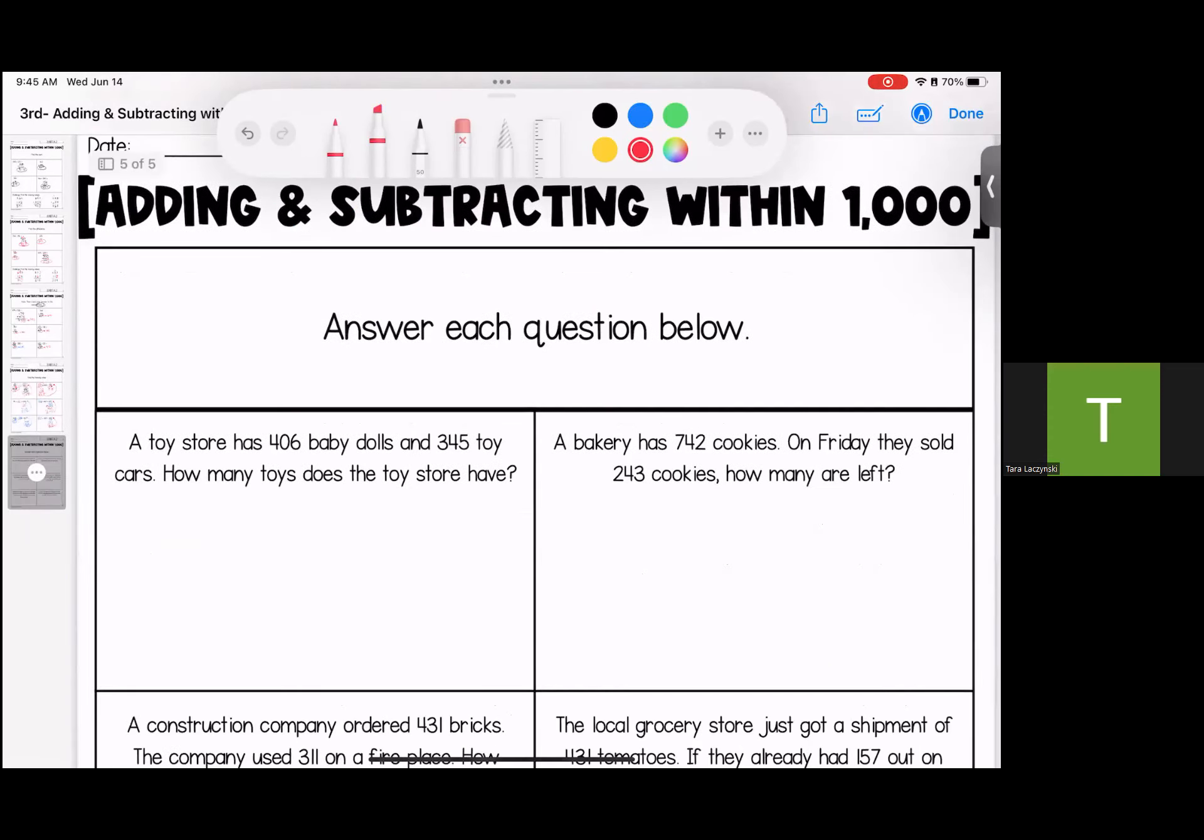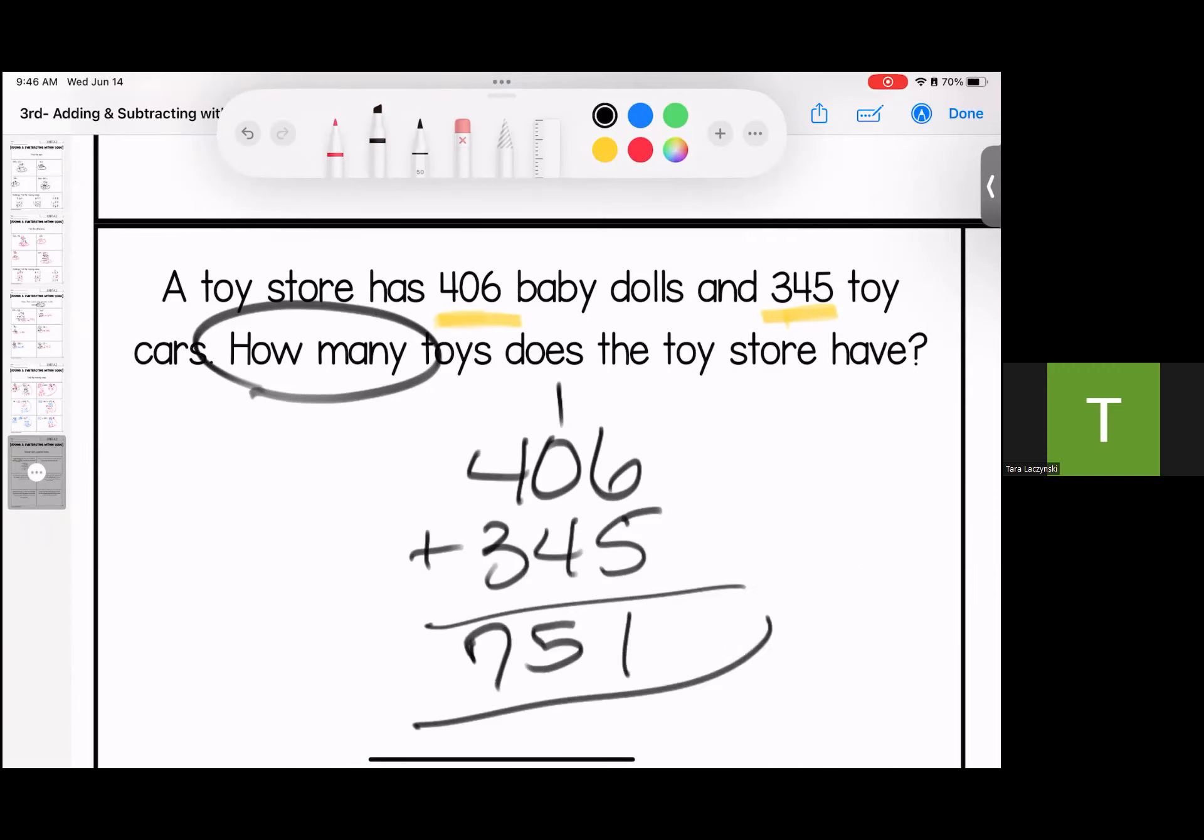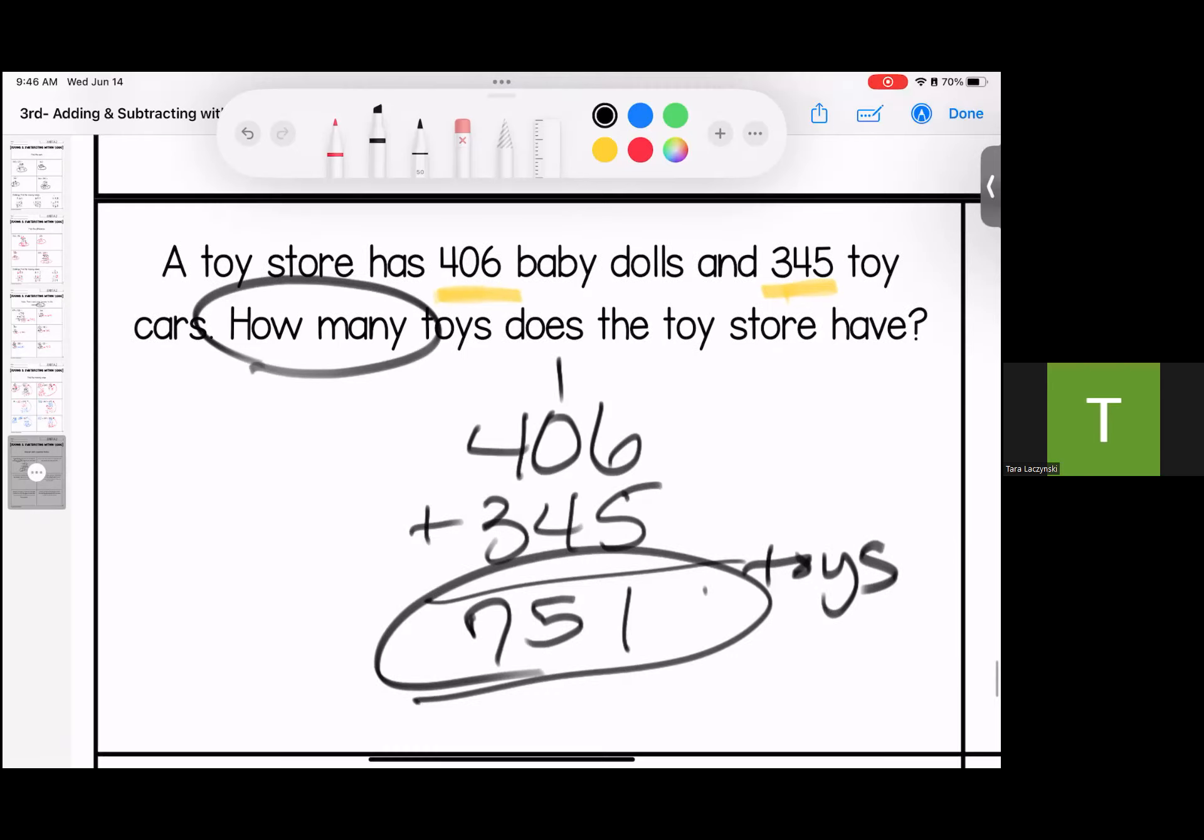Last one, we're looking at some word problems, the icky, sticky, tricky. It says a toy store has 406 baby dolls and 345 toy cars. How many toys does the toy store have? How many? I'm going to add 406 plus 345. 11, 5, 7, 751 toys in the toy store.